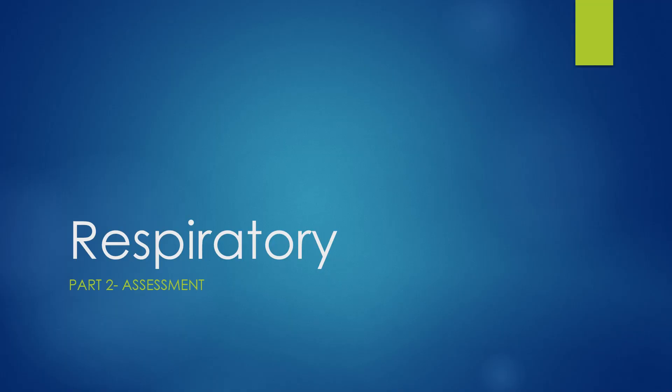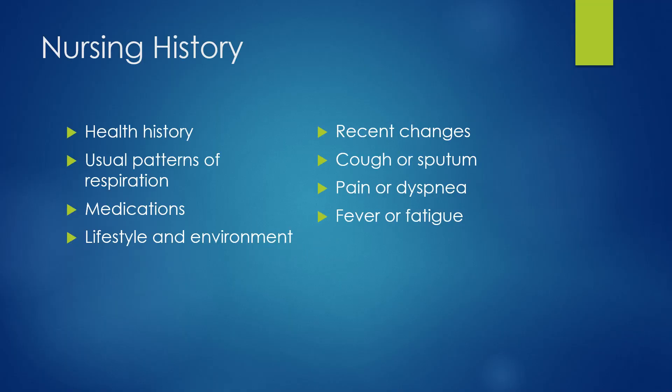Welcome to part two of respiratory. We're going to focus on how to assess the respiratory system. The first part of the assessment is our history, asking all the questions related to breathing. Depending on how sick your patient is, we could ask a lot of questions or just a few. This body system doesn't function on its own — it affects everything, so sometimes questions may cross body systems.